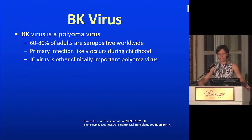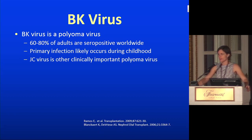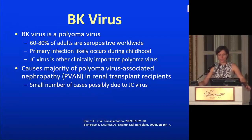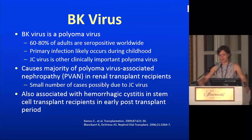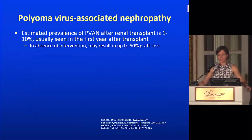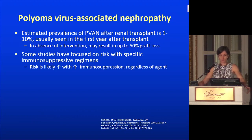BK is also associated with hemorrhagic cystitis in stem cell transplant patients early after transplant, and there's growing evidence some of those patients also get nephropathy. The estimated prevalence of polyomavirus-associated nephropathy after renal transplant is one to ten percent, usually in the first year. In the absence of intervention, you can have up to 50% graft loss. The risk is probably higher with increased immunosuppression regardless of which agent is used. It's diagnosed histologically on renal biopsy with immunohistochemical stains. Early polyomavirus nephropathy is patchy, so you can miss it on biopsy.